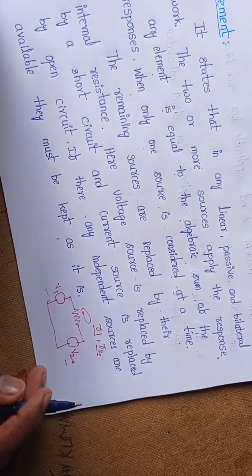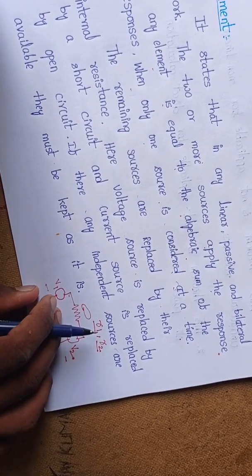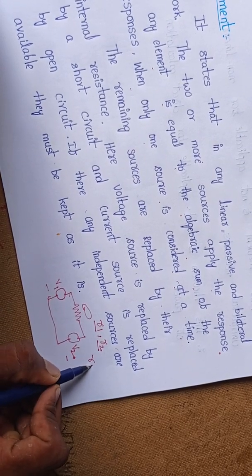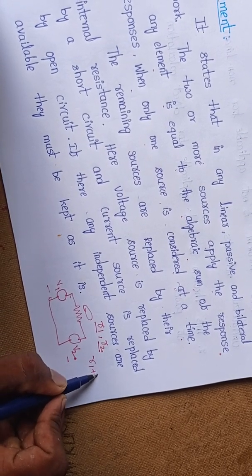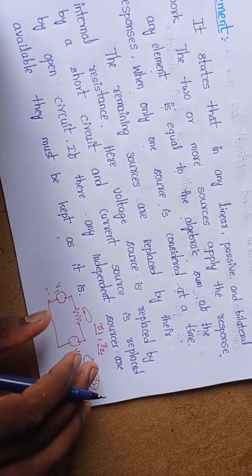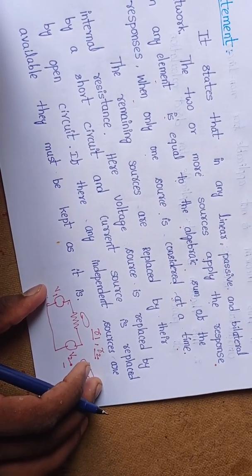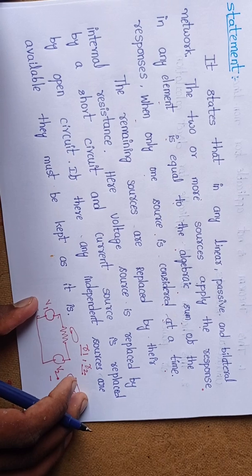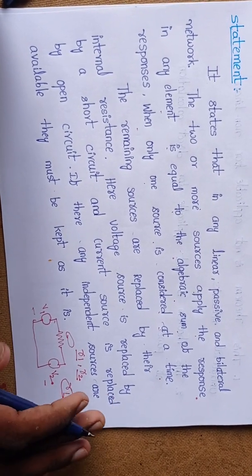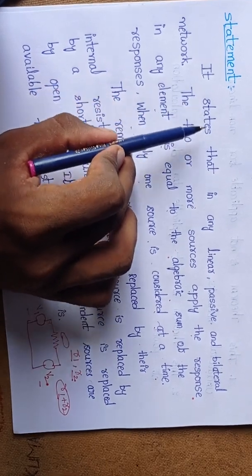If we add R1 plus R2, that is the sum of the responses of V1 and V2. If we apply both V1 and V2 at the same time, the response is equal to R1 plus R2. That is the superposition theorem.